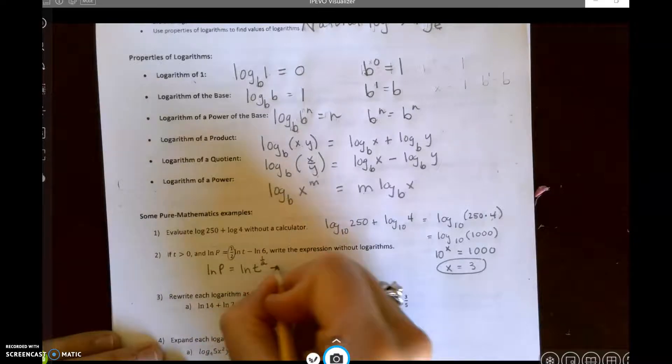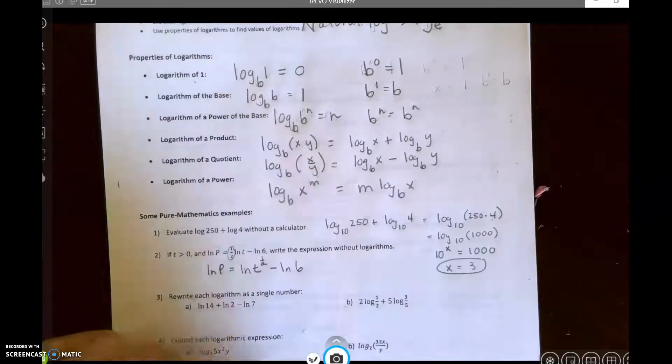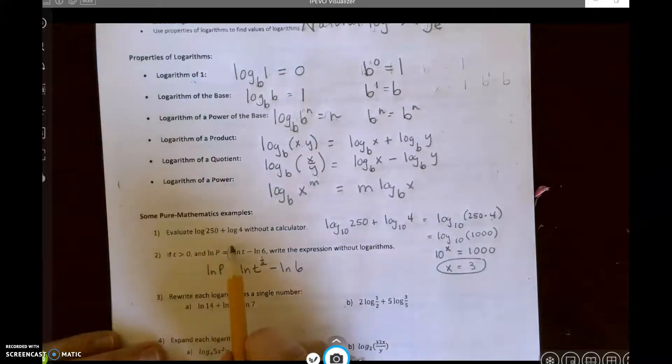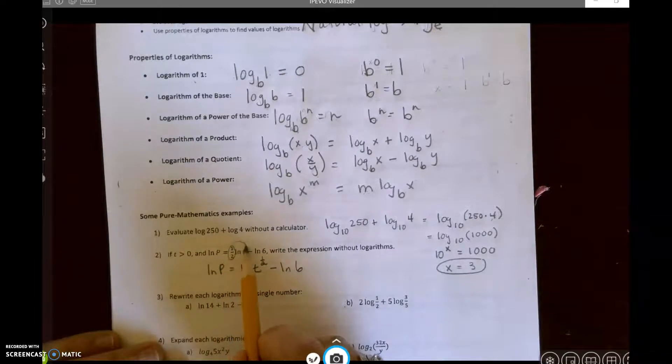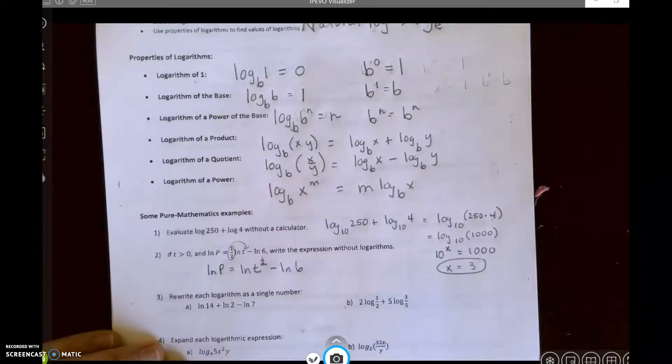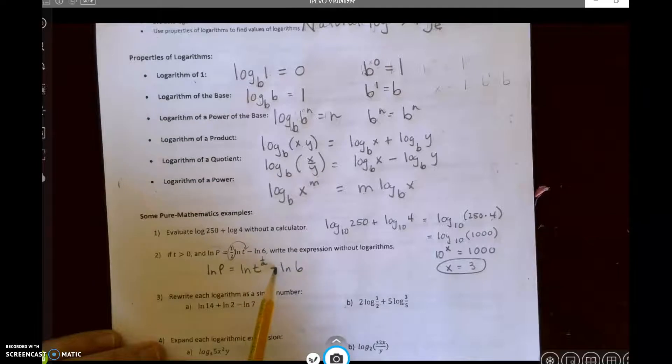Equals the natural log of t to the one-half and minus the natural log of 6. So the first thing I did was I moved this multiplier to there. I needed an exponent.